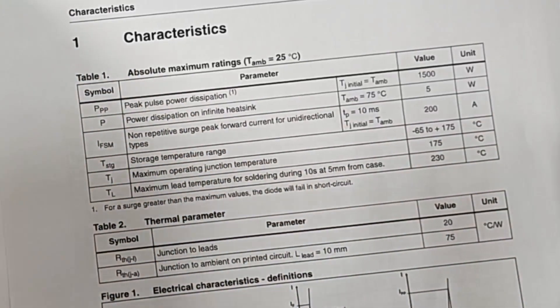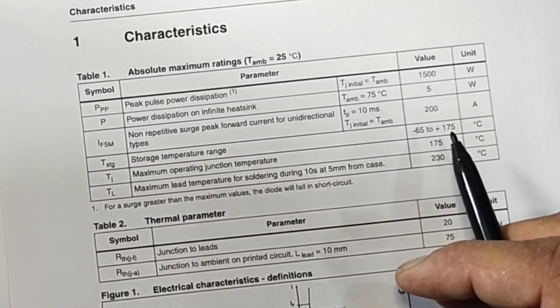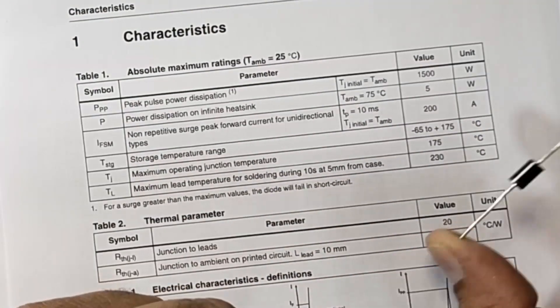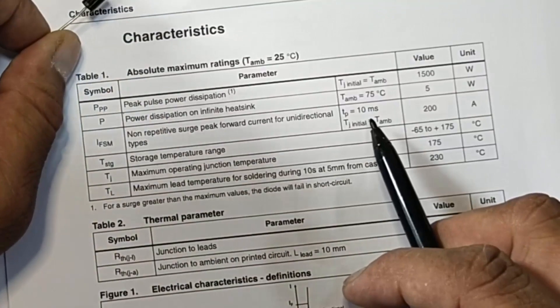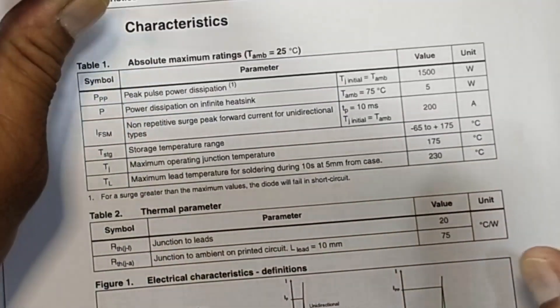And non-repetitive peak pulse forward current 200 ampere forward current. Above 10 millisecond it will damage. In forward condition, 200 ampere less than 10 millisecond it can work normally.